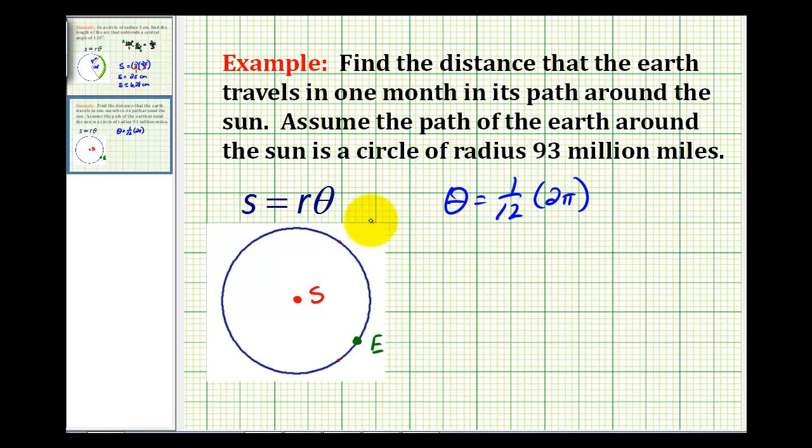Remember, two pi radians would be one rotation around the circle. So if we simplify this, for this problem we're going to use theta equals pi over six.